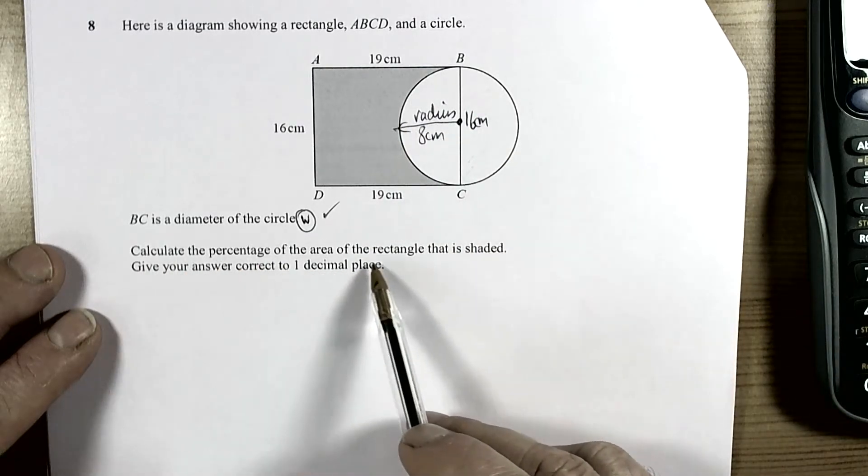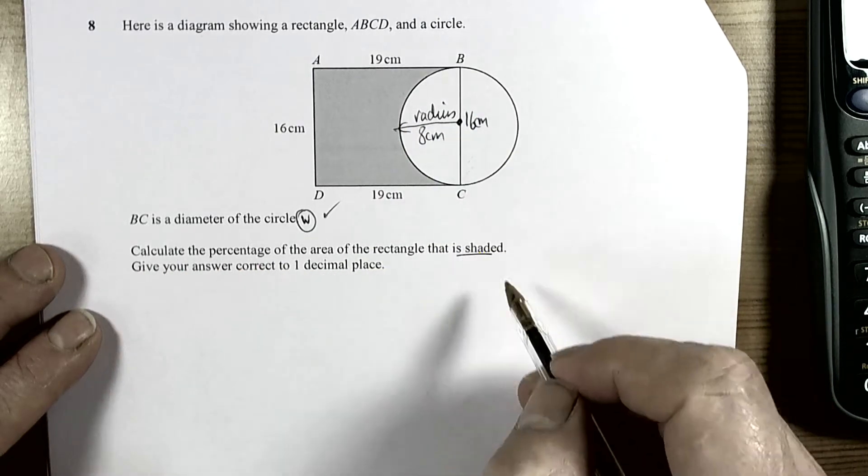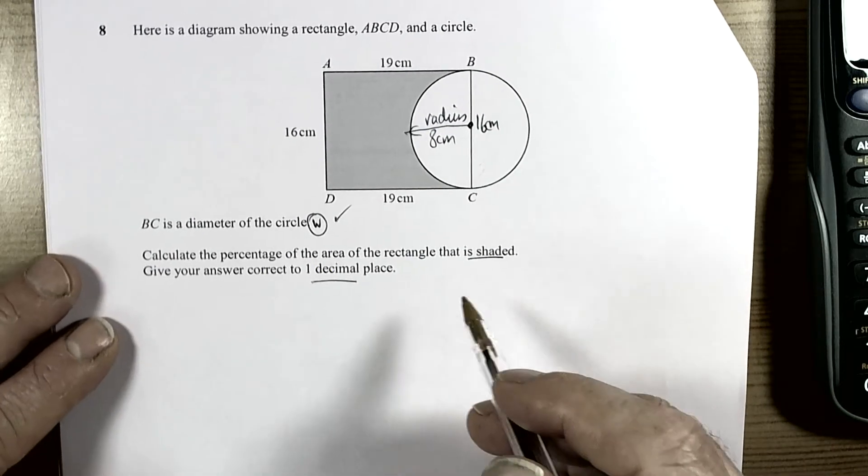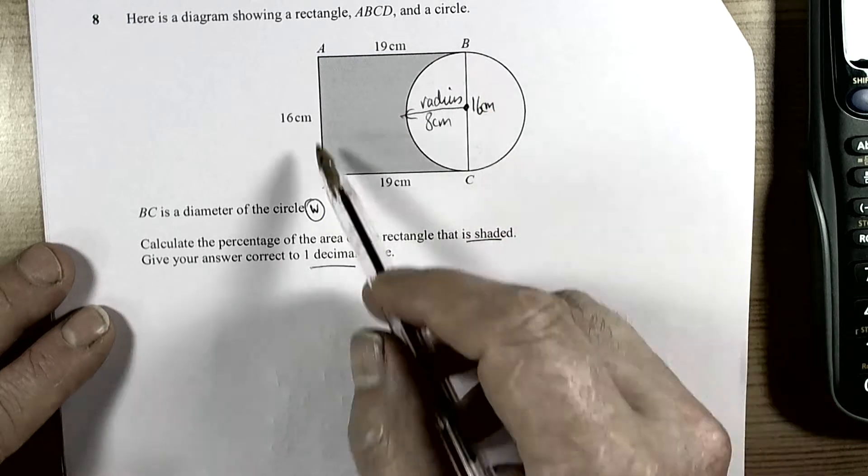It says calculate essentially the area of the rectangle that is shaded. Give your answer to one decimal place. Well, we need to work out the area of the rectangle to start with.